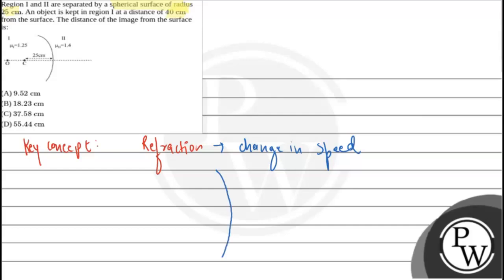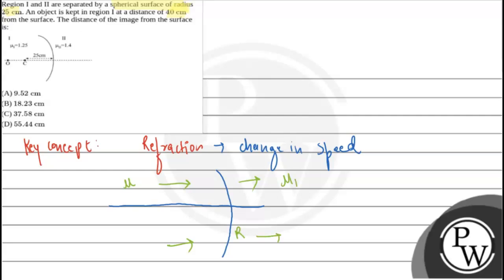So, if we consider a spherical surface with a principal axis, and a light ray passing through it — where light comes from, the refractive index is mu1, and where light goes, the refractive index is mu2. The refraction through a spherical surface formula is: mu2/v minus mu1/u equals (mu2 minus mu1)/r.